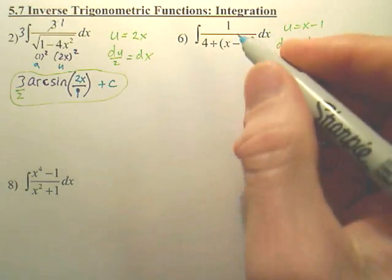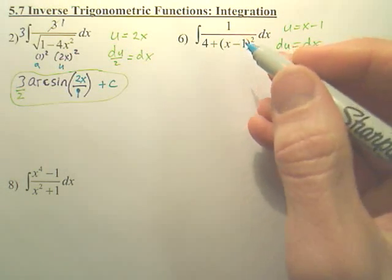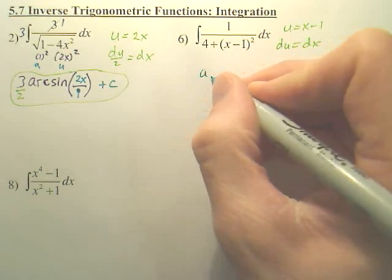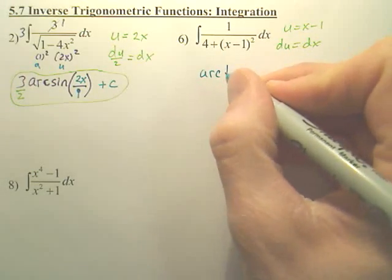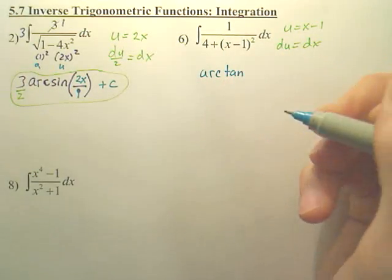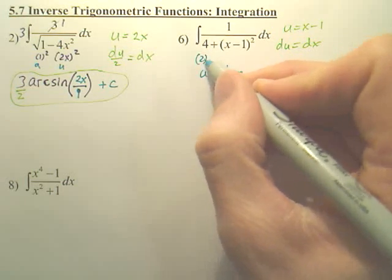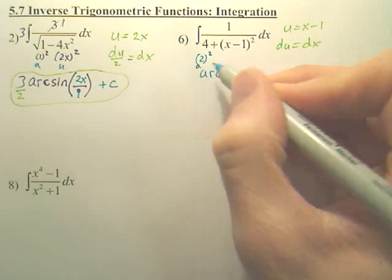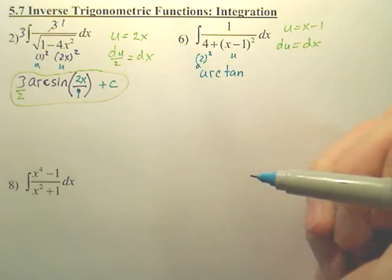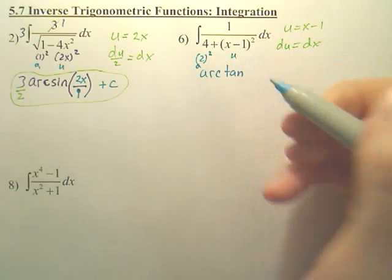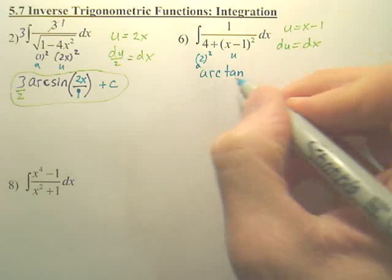Okay. And what we notice on this one, this one's going to be an arc. Arc what? Arc tangent. And by the way, what's your a value? This is 2 squared. So your a is 2, and that's your u. Your a is 2, that's u.